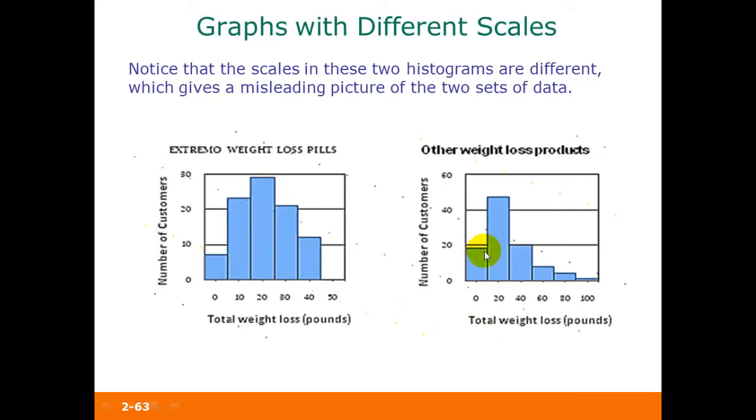Looking at the two graphs, it appears that much more weight was lost with extremo weight loss pills than with other weight loss products. But if you actually look at the numbers on the scales of the graph, the one on the left has a vertical axis that only goes up to 30, while the one on the right goes up to 60.